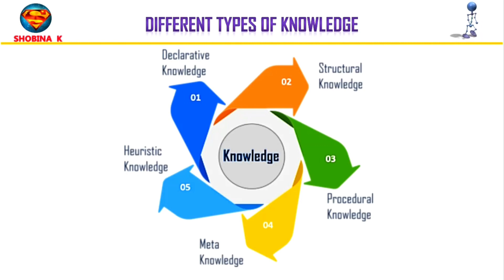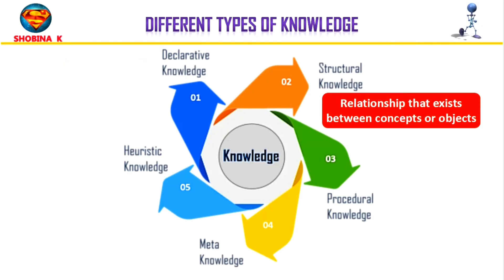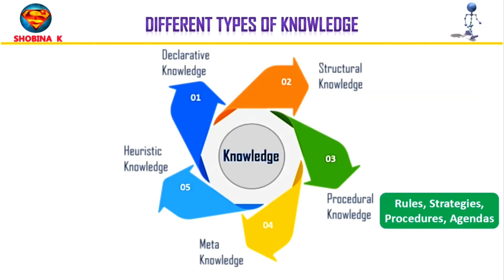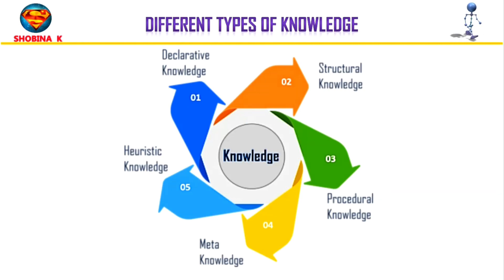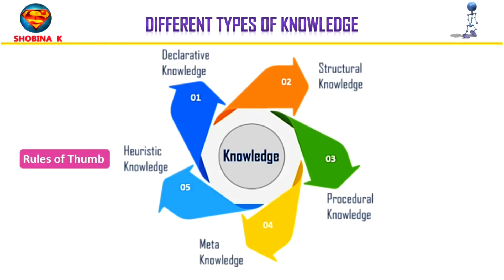First, we have declarative knowledge, which includes concepts, facts, and objects expressed in a declarative sentence — it deals with the description of things. Then we have structural knowledge, which is basic problem-solving knowledge describing the relationship between concepts and objects. Next is procedural knowledge, which is responsible for knowing how to do something and includes rules, strategies, and procedures. The fourth one is meta knowledge, which defines knowledge about other types of knowledge. Finally, we have heuristic knowledge, which represents expert knowledge in a field or subject.